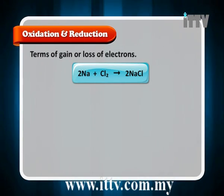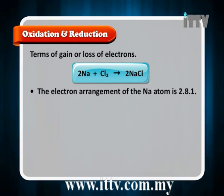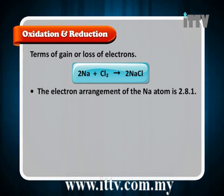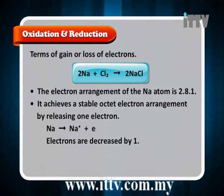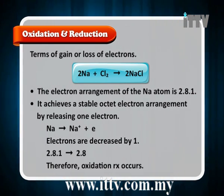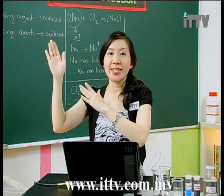Let us look at another example of the reaction between sodium and chlorine to produce sodium chloride. The electron arrangement of sodium is 2.8.1; it achieves a stable octet by releasing one electron, becoming a sodium ion with configuration 2.8. So electrons decrease by one — therefore oxidation has occurred because electrons are lost.